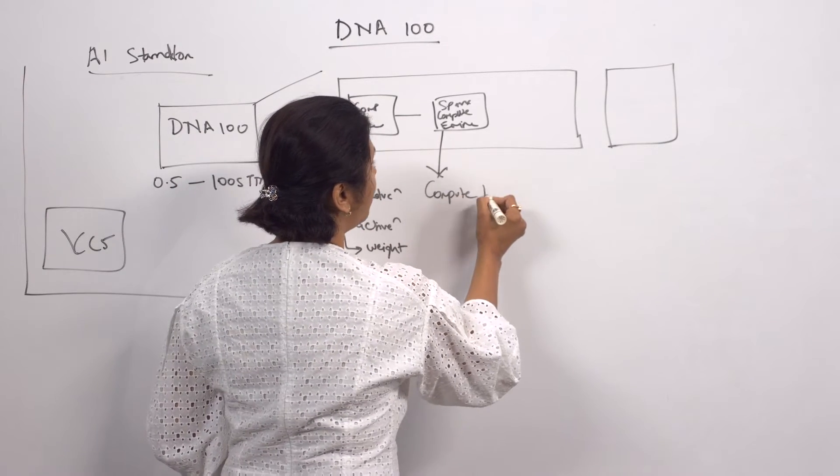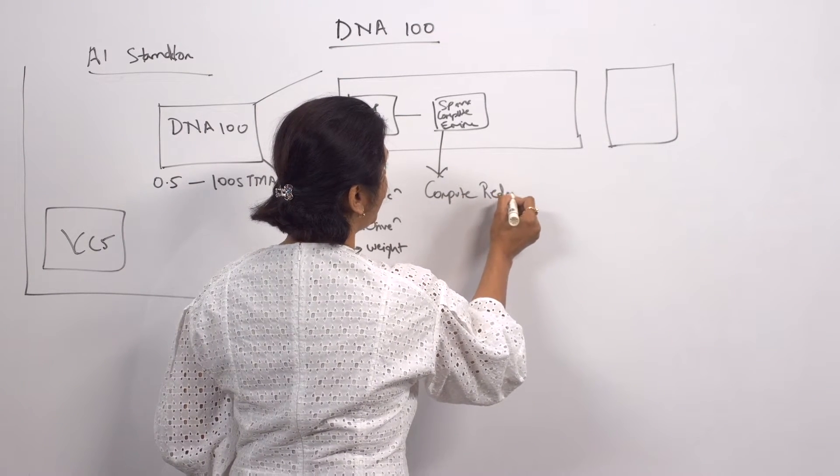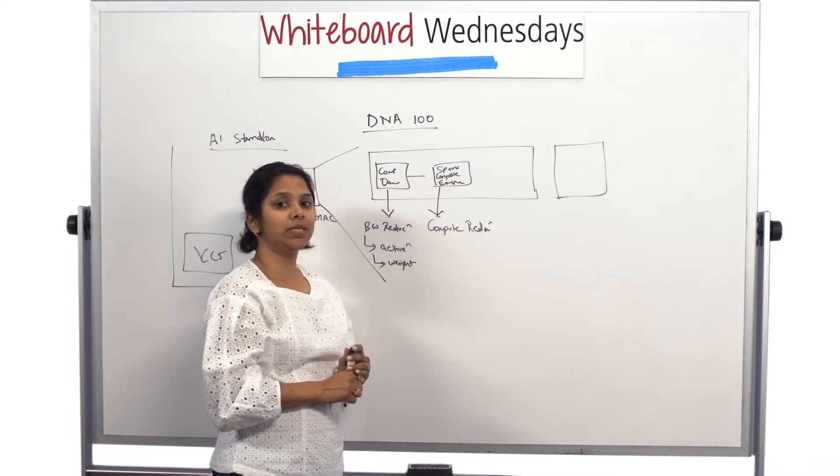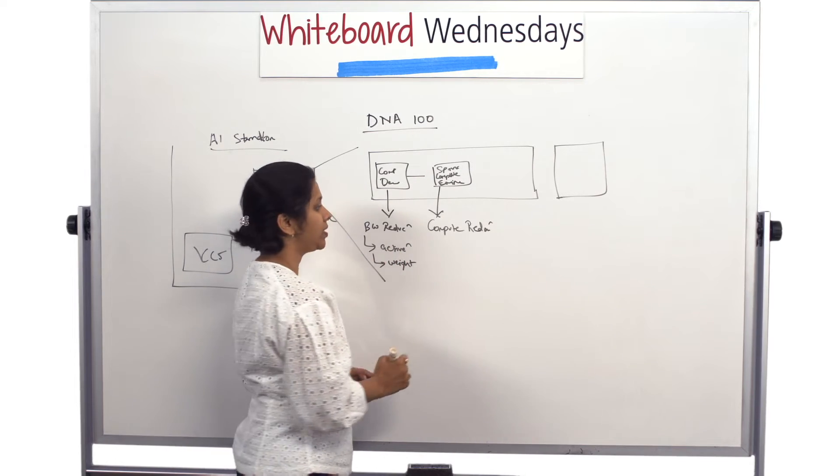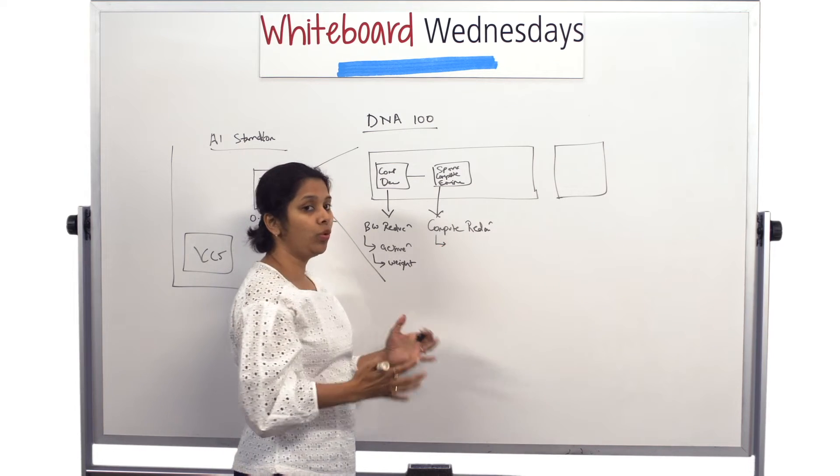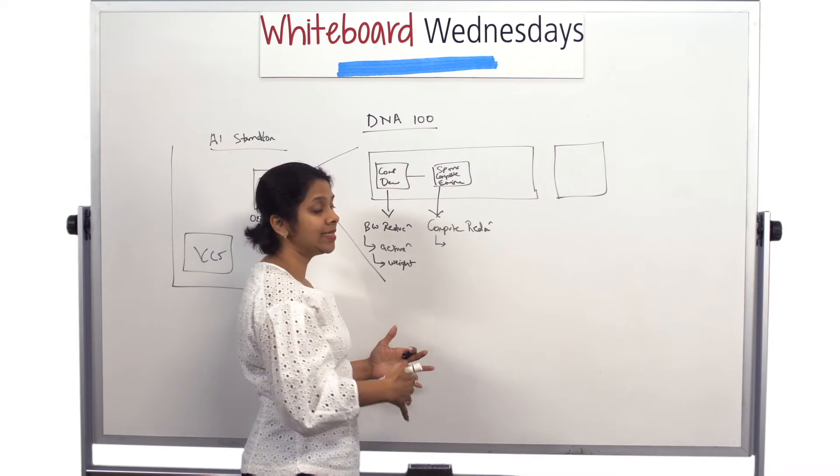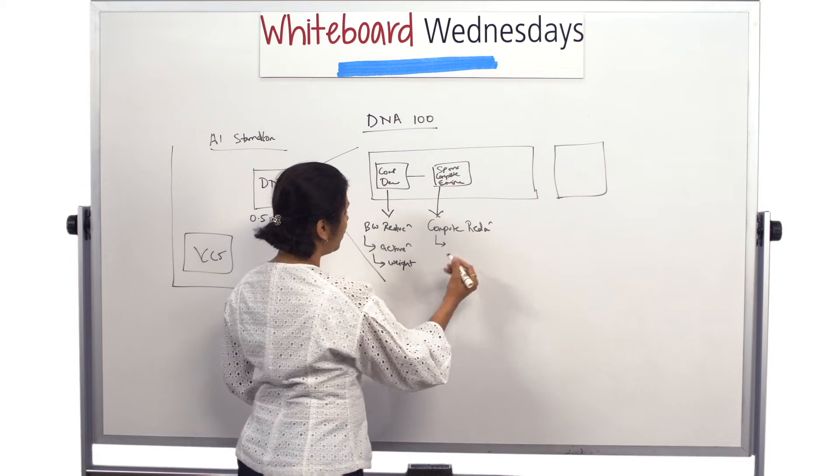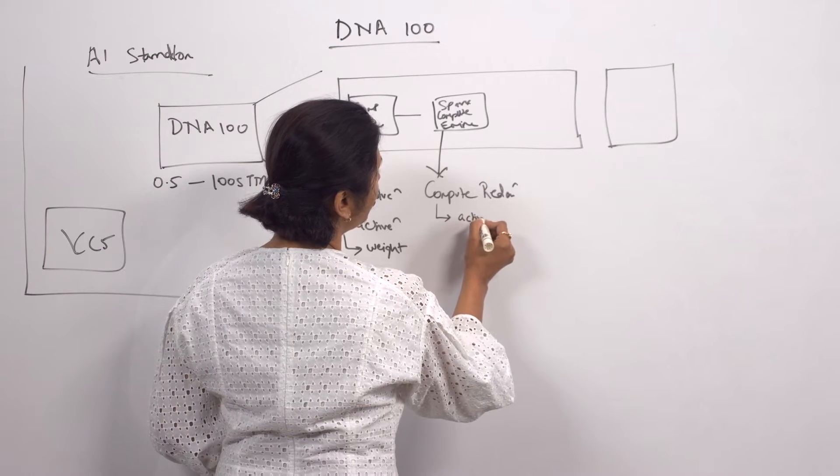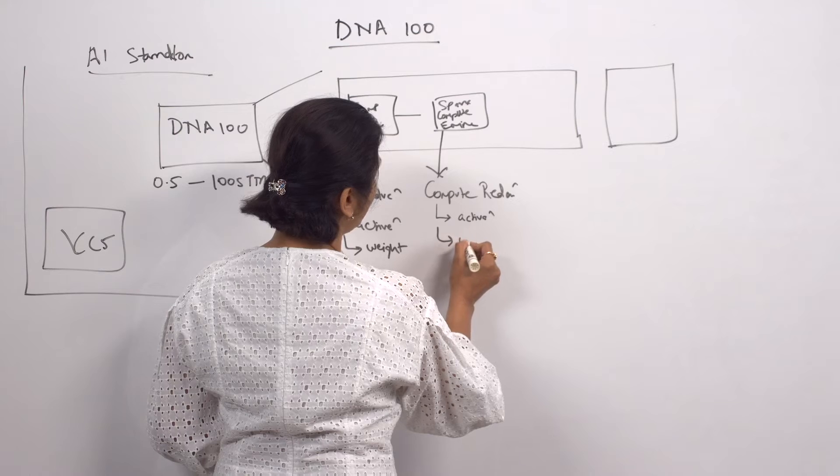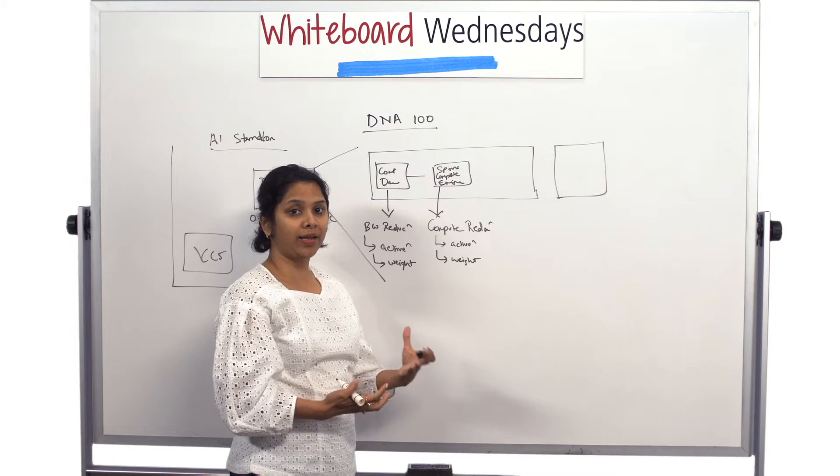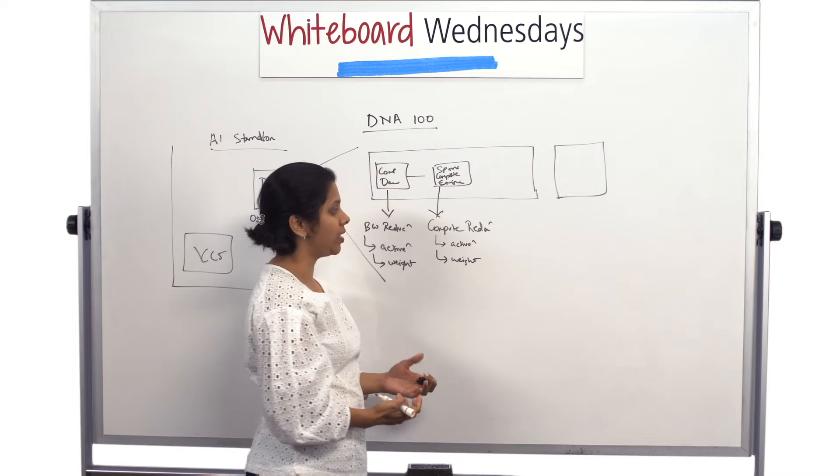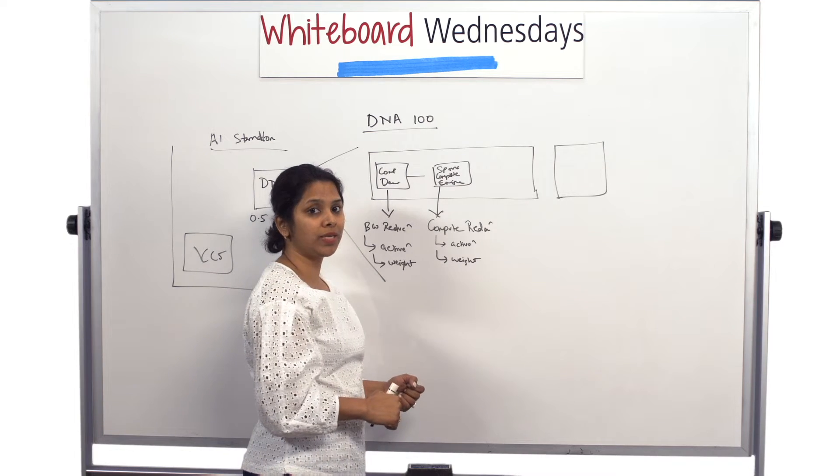So for the compute reduction what we are doing is we are avoiding multiplication by any of the zeros, be it an activation or a weight. So now we are reducing our overall compute and hence increasing our throughput. So we are able to get much more performance out of a system compared to what physical MAC array is actually capable of giving, and that's where we get one of the biggest push from.